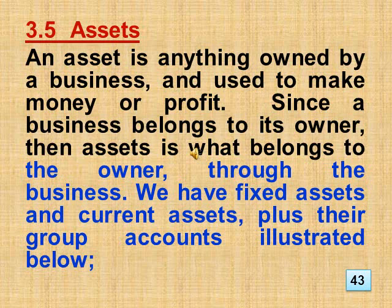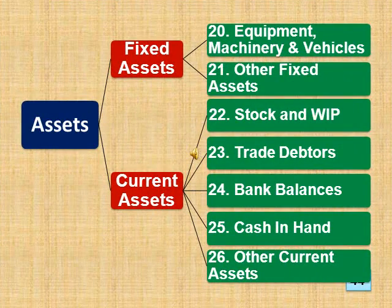Section 3.5 Assets: An asset is anything owned by a business and used to make money or profit. Since a business belongs to its owner, assets is what belongs to the owner through the business. We have fixed assets and current assets, plus their group accounts illustrated below. The individual accounts in the group of fixed assets are: 20. Equipment, Machinery and Vehicles; 21. Other fixed assets. The individual accounts in the group of current assets are: 22. Stock and WIP, 23. Trade debtors, 24. Bank balances, 25. Cash in hand, plus 26. Other current assets.